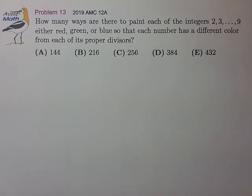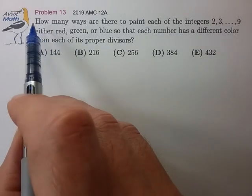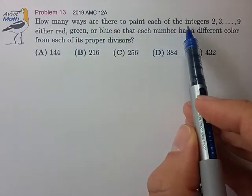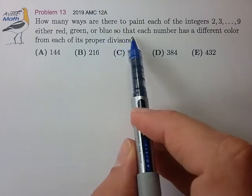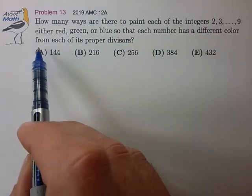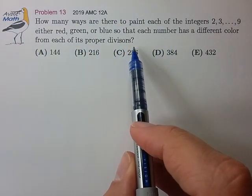Hi, this is problem 13 from the 2019 AMC 12A. How many ways are there to paint each of the integers 2 through 9 either red, green, or blue, so that each number has a different color from each of its proper divisors?